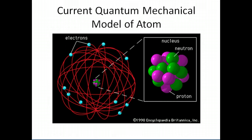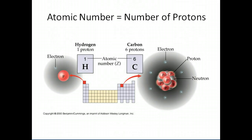This is a view of the current quantum mechanical model of the atom. Because of Rutherford, we know we have a nucleus that is a very small, dense, concentrated center containing most of the mass and all the positive charge. The electrons are out there in orbitals — regions where we're likely going to find them. We cannot pinpoint their exact location at any given time, but we can define areas where we're likely going to find them. The atomic number, the number of protons, relates to its position on the periodic table.